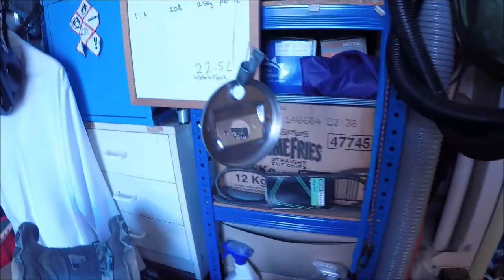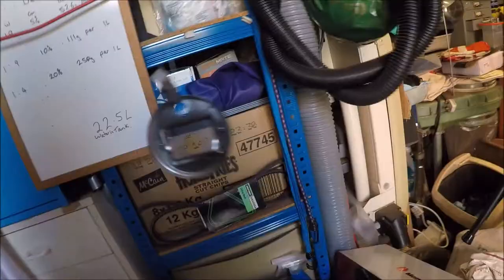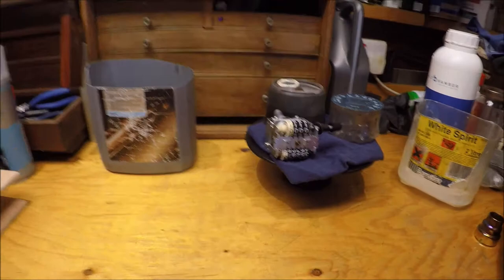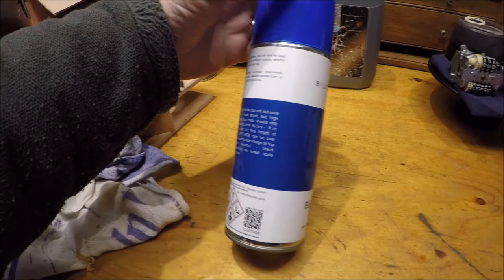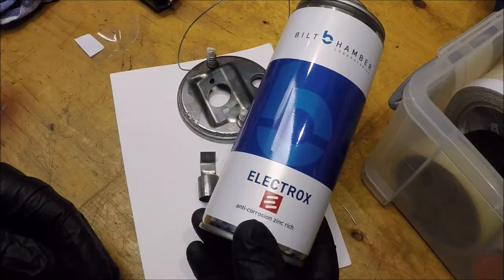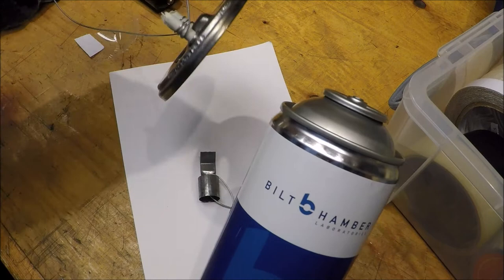The backing plate has been de-rusted, so that's all now looking very nice and shiny and clean again. We're going to use some of this Bilt Hamber Electrox, which is a zinc-rich paint. I've got this all masked up and wired up ready to paint.